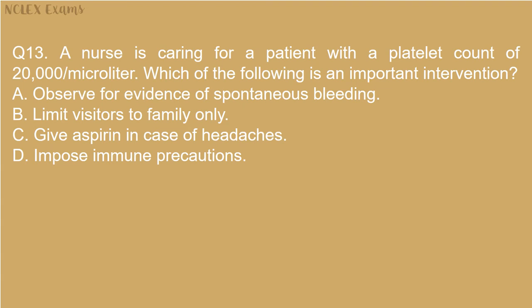Question 13: A nurse is caring for a patient with a platelet count of 20,000 per microliter. Which of the following is an important intervention? A. Observe for evidence of spontaneous bleeding. B. Limit visitors to family only. C. Give aspirin in case of headaches. D. Impose immune precautions.